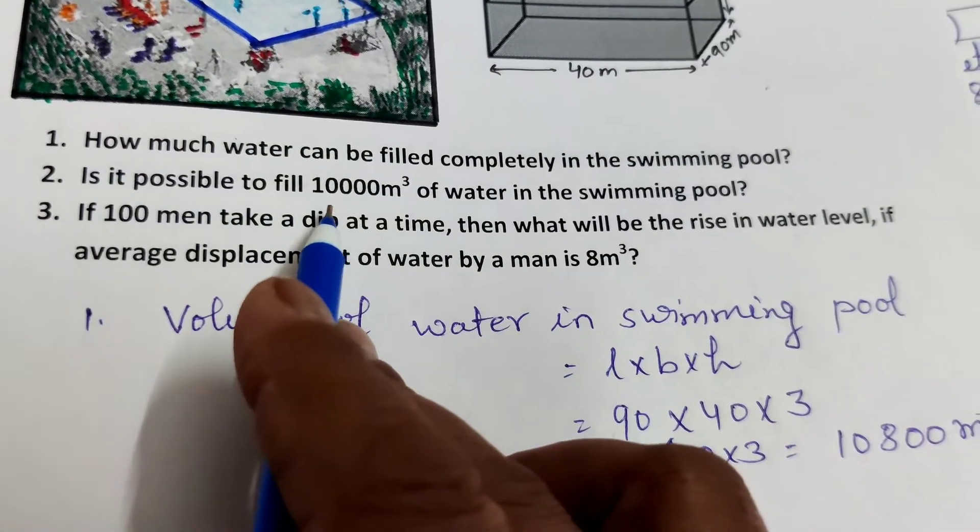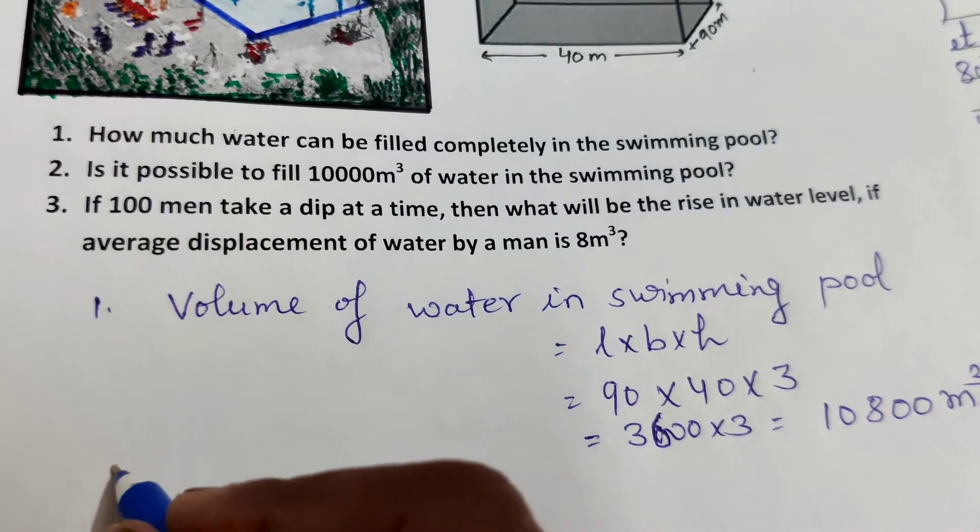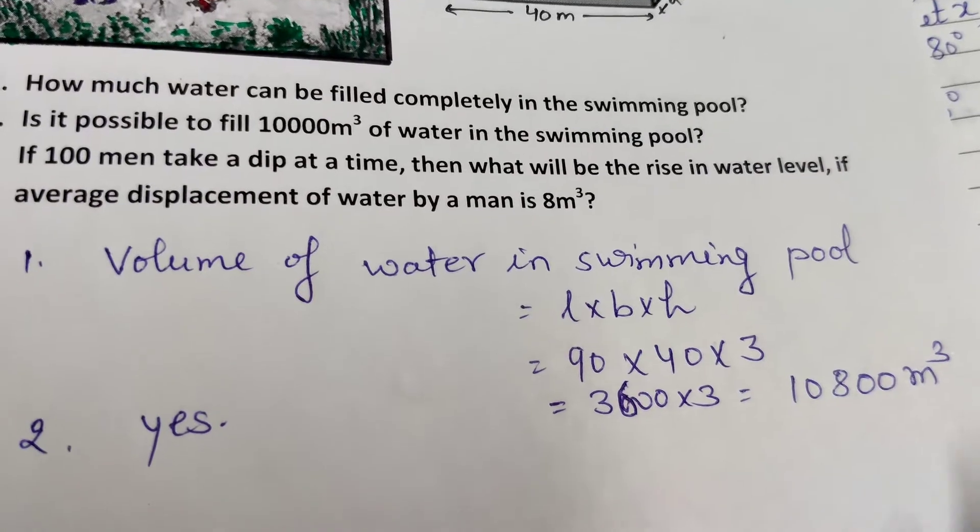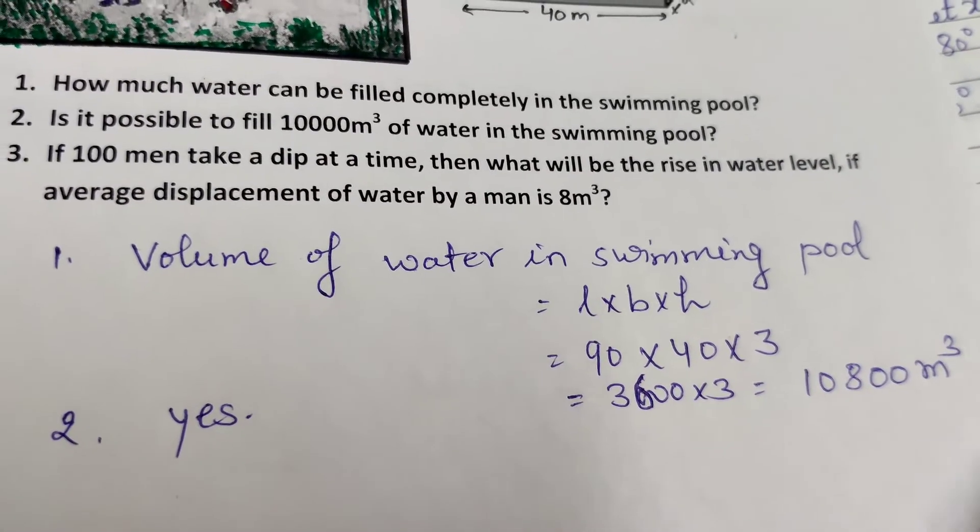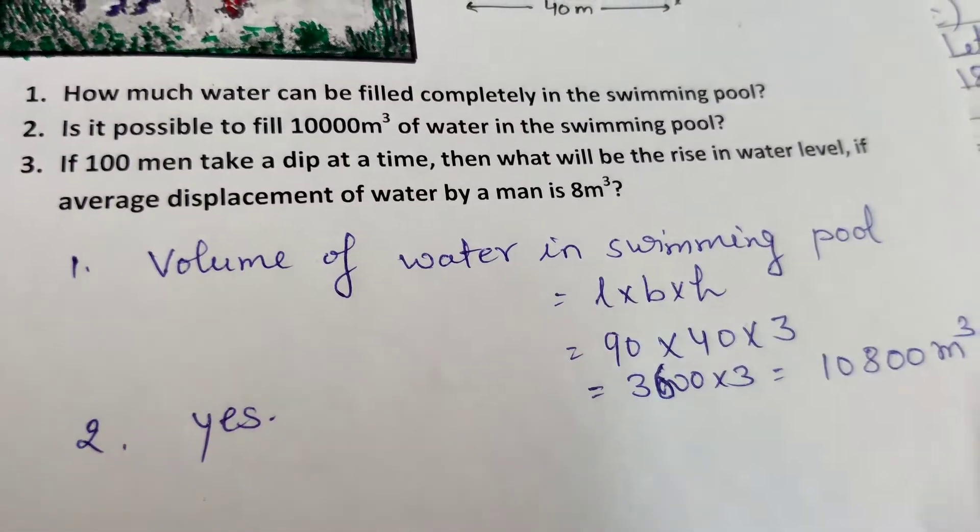Question two: Is it possible to fill 10,000 cubic meters of water in the swimming pool? Yes, because the capacity of the tank is 10,800 cubic meters, which means 10,000 cubic meters of water can fit in the swimming pool.